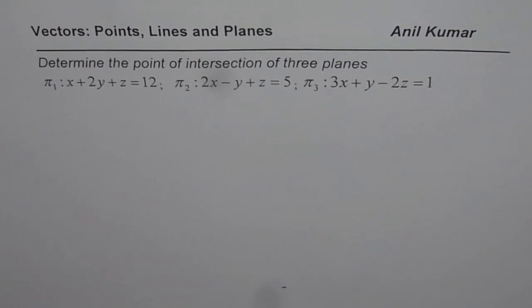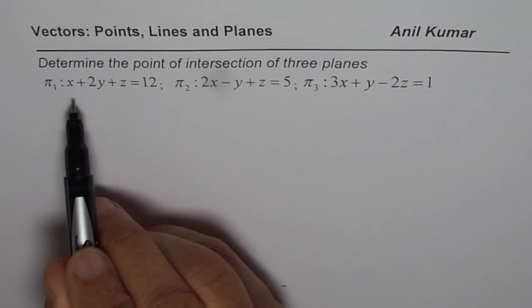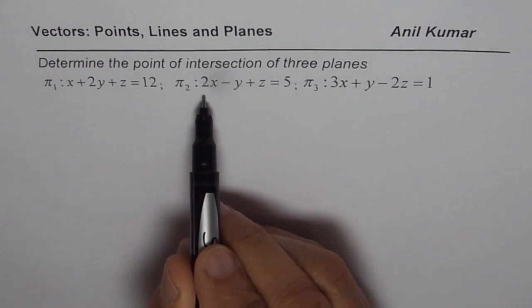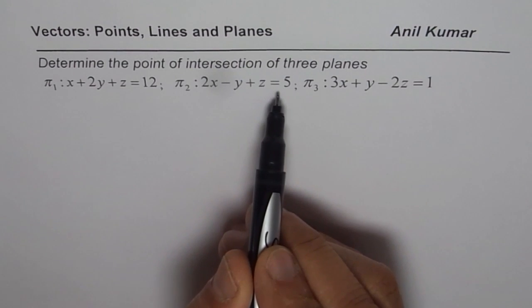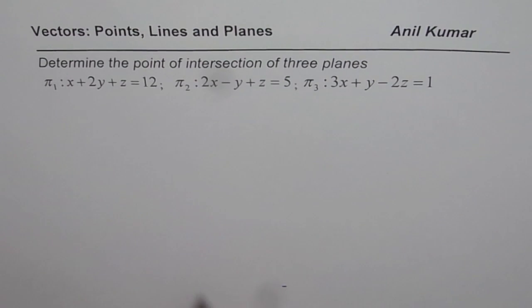The question here is: determine the point of intersections of three planes. Planes are x + 2y + z = 12, 2x - y + z = 5, 3x + y - 2z = 1.